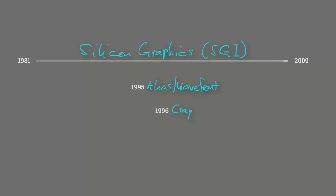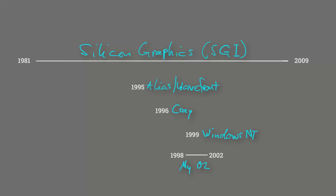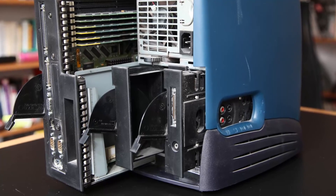In 1996, SGI purchased the then-leading supercomputer company Cray Research — quite amazing, as Cray was such a big name at that time. The decline came when Maya was ported to Windows NT in 1999. All of a sudden you could run this complex piece of software on a PC that cost a tenth of the price of the O2. I made that transfer to Windows a few years later.